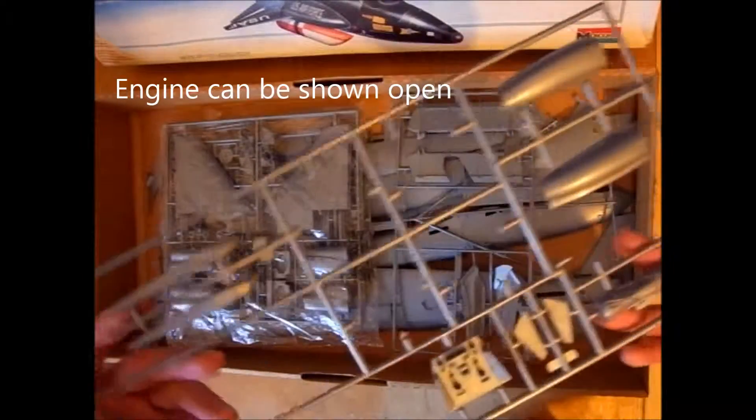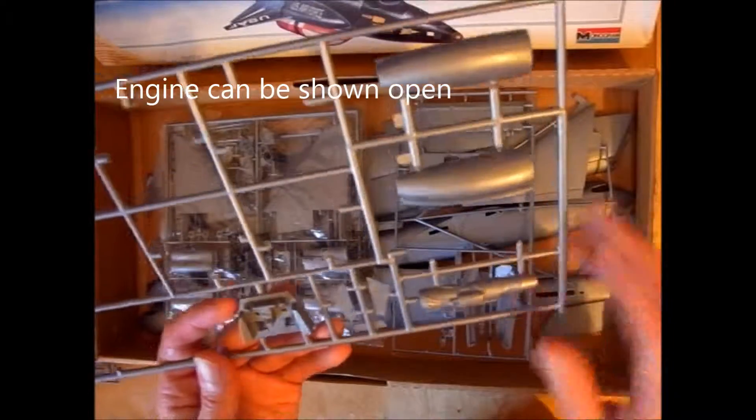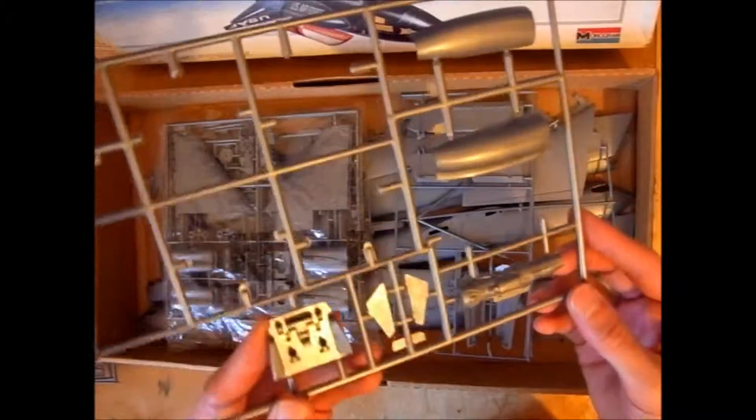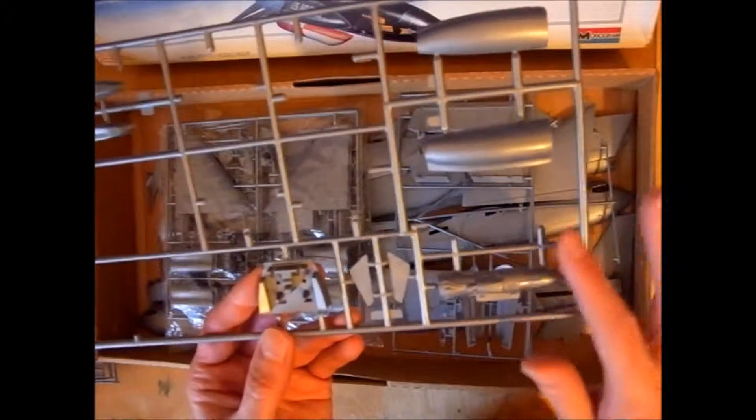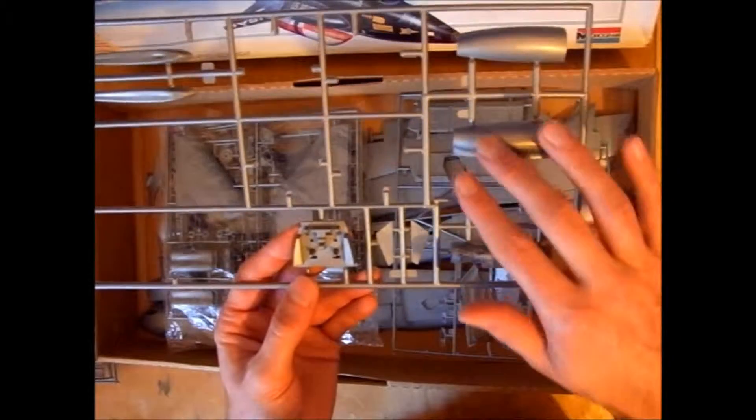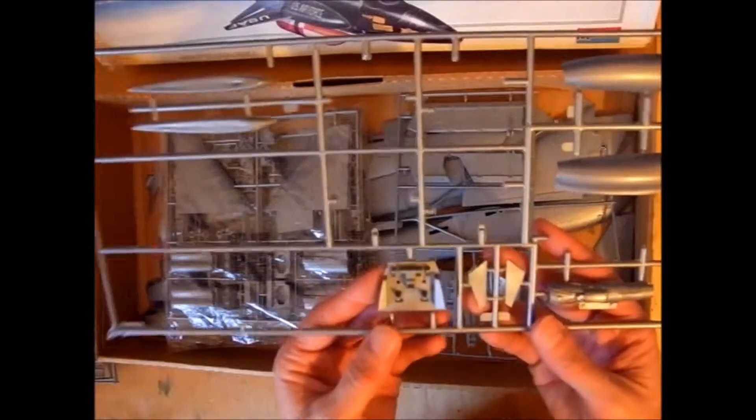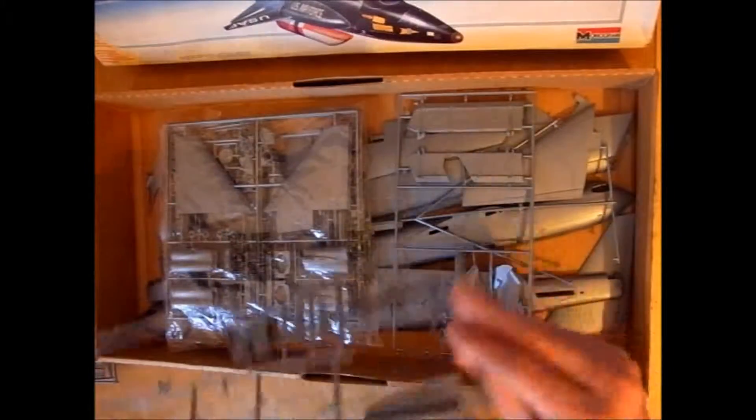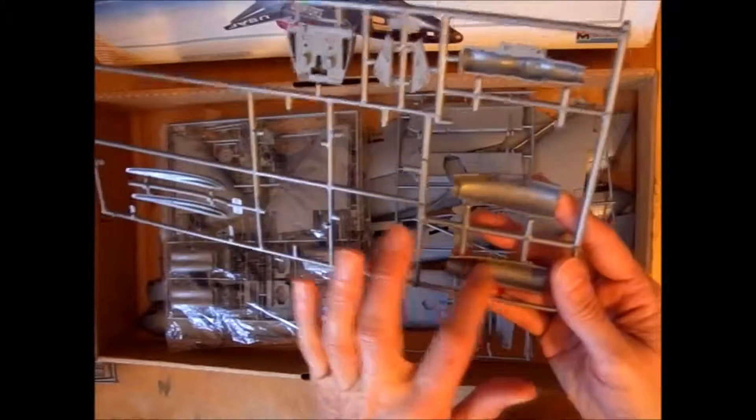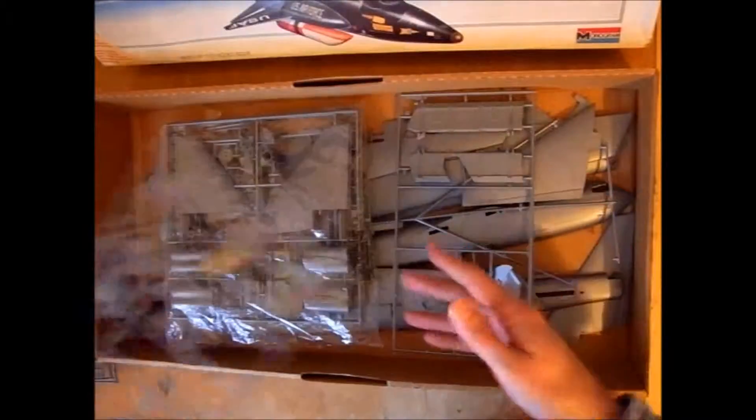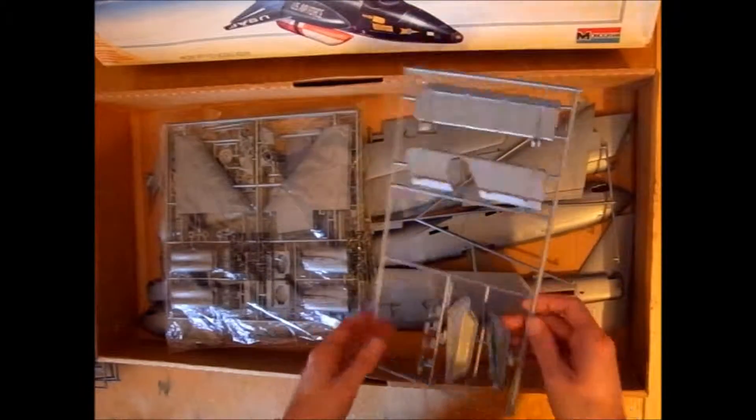That I like. So here we see the famous Pratt & Whitney J33 engine. Not very detailed, but at least it's there, so we can build an open engine. The cowl is very simple keeping, but anyway, okay. Here we see the cowl for the engine. You see the small ribs and all these things.